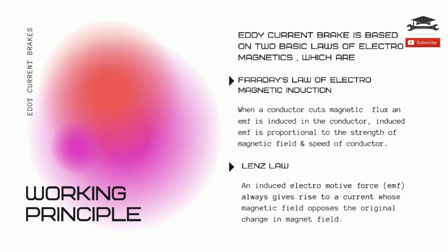The direction of the current is in such a way as to oppose the cause, that is the movement of the disc. Thus, the moving conductor will experience a drag force from the magnet that opposes its motion, proportional to its velocity. The electrical energy of the eddy currents is dissipated as heat due to the electrical resistance of the conductor.